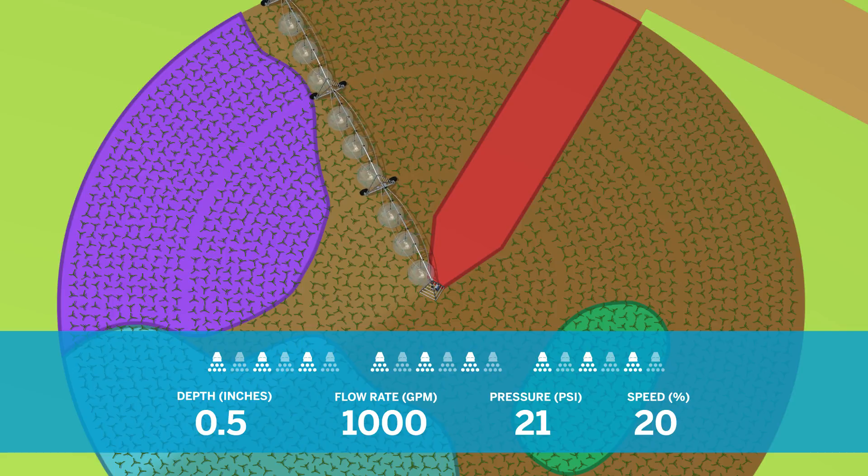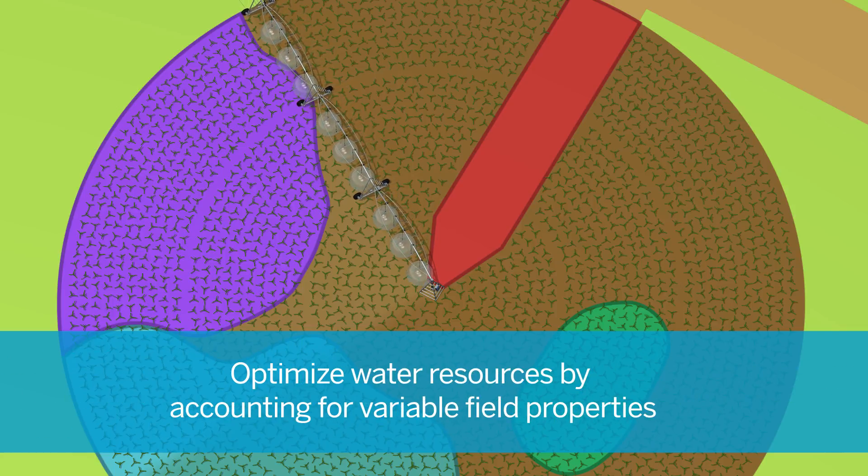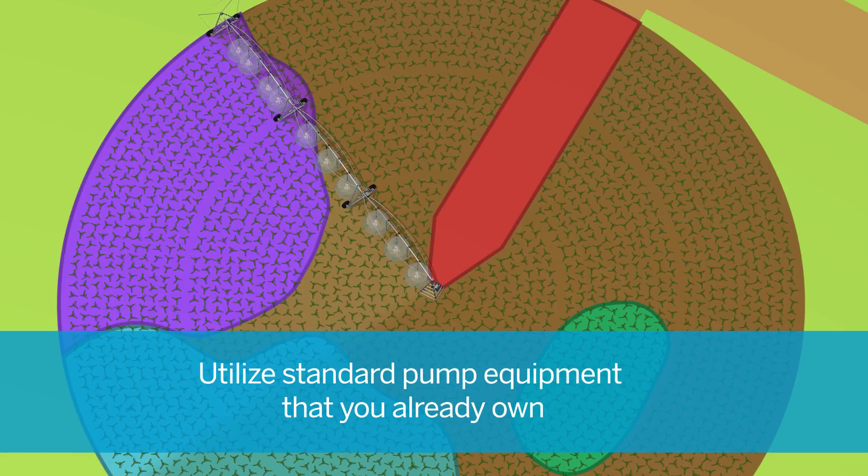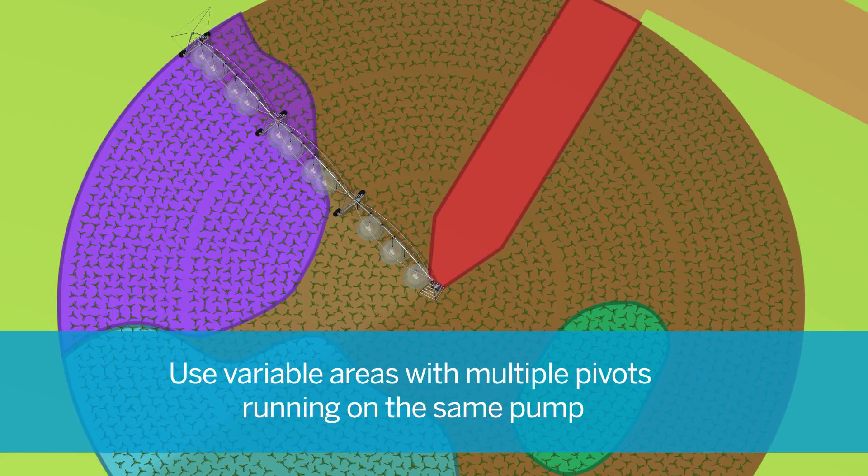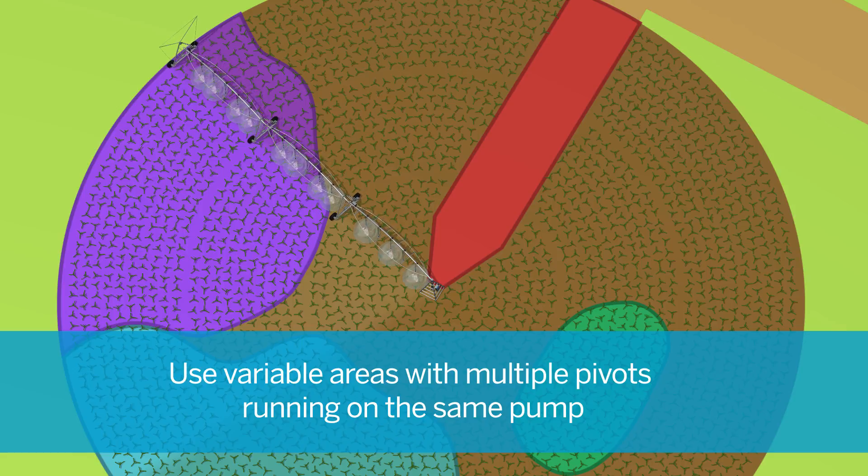Optimal flow lets you optimize water resources by accounting for variable field properties. Utilize standard pump equipment that you already own. Use variable areas with multiple pivots running on the same pump.